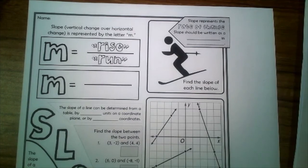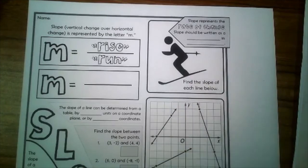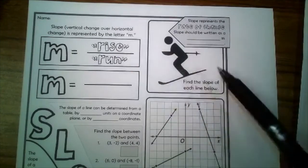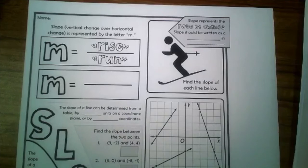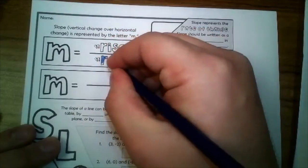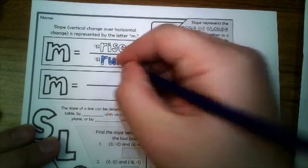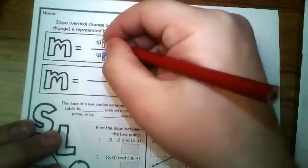Today we're going to talk about slope and the rate of change, and we're going to use doodle notes. For the doodle notes, you have to write what I write but you're allowed to doodle inside the given areas. Since you're going to need color today, I'm choosing red and blue — you could color in the R, the U, and the N in blue, and do the rise in red.